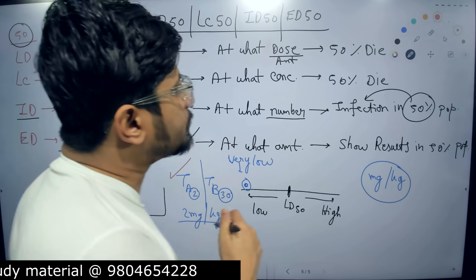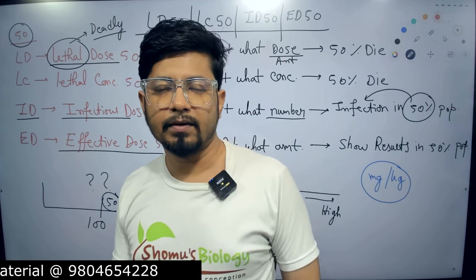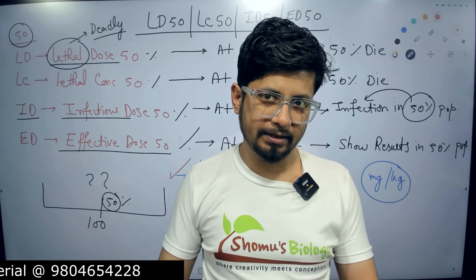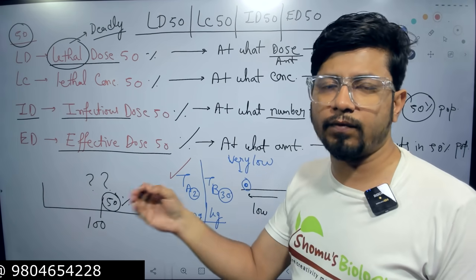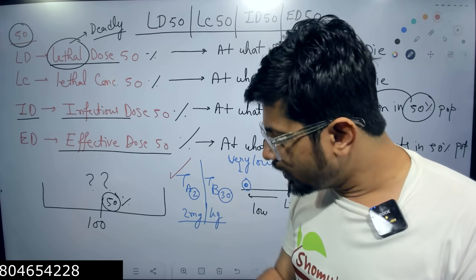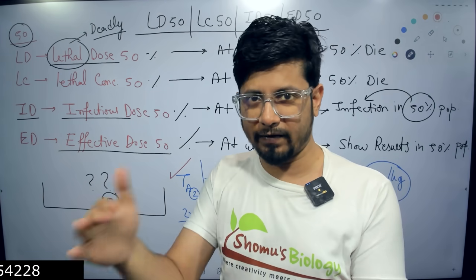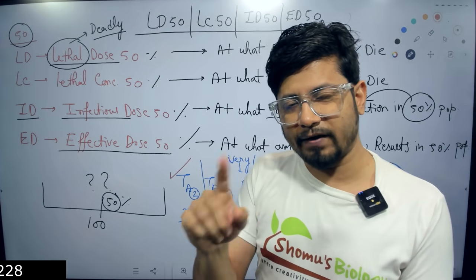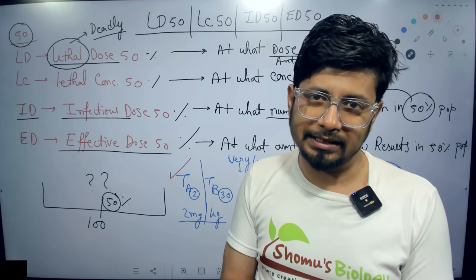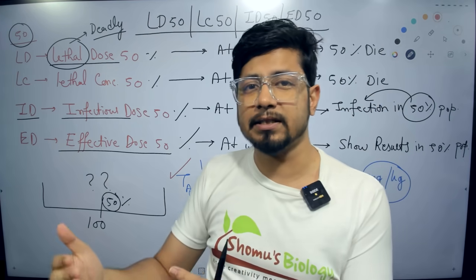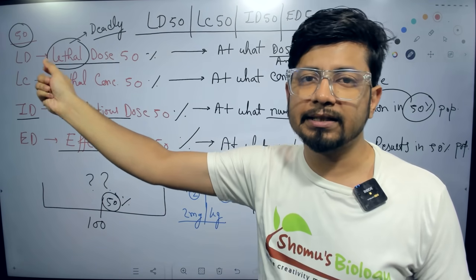So LD values are inversely related to the impact: lower the value, higher the impact on the population. On the other hand, for Effective Dose — if one medicine's ED value is 10 and another's is 90, that means the medicine with ED 90 needs 90 mg/kg to show a visible effect in 50% of the population, while the other needs only 10 mg/kg to cure the disease. So for effectivity, lower ED value is better. For toxicity and lethality, lower value means highly lethal. For infectivity, lower value means higher infectivity.